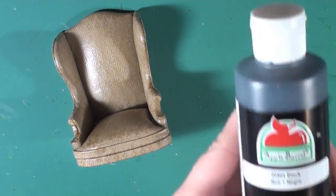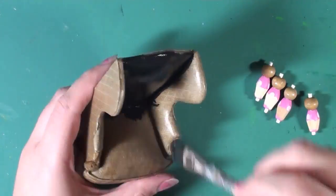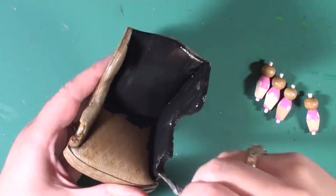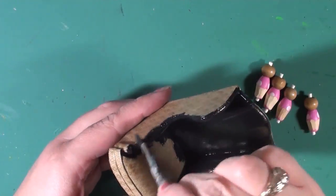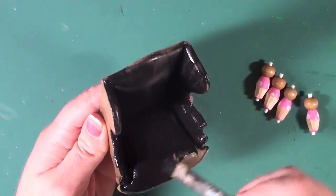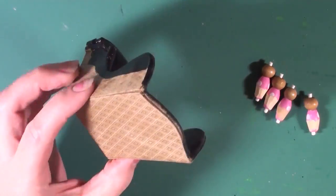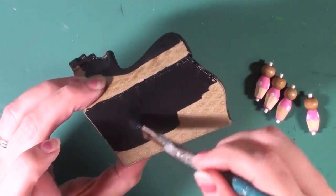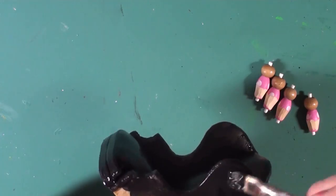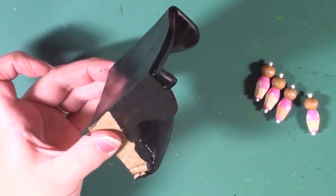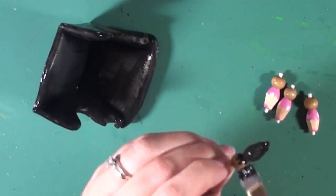Before I attach the legs to the chair I decided to go ahead and give it a coat of black paint. And the reason I'm painting it black is because I'm going to age this chair and put some cracks in the leather. And I don't want the color of the fabric showing through, I want the black to show through. So that's why I'm doing a first coat of black. The end look is not going to be black. And you can paint this after you attach the legs. I'm not quite sure why I chose to do it before. It doesn't really matter. But that's what I did.